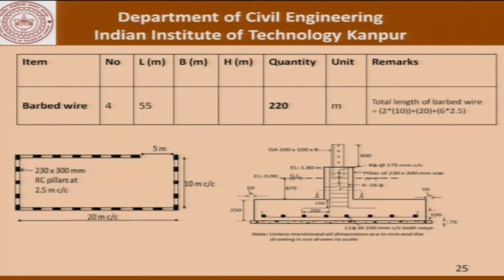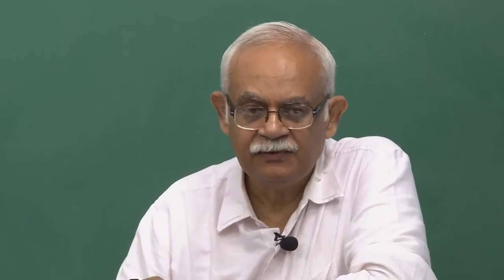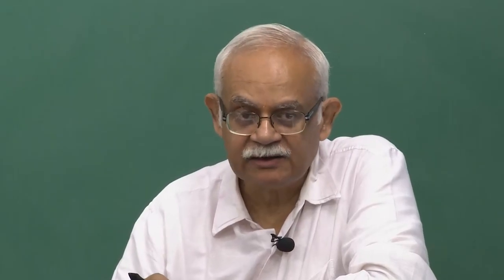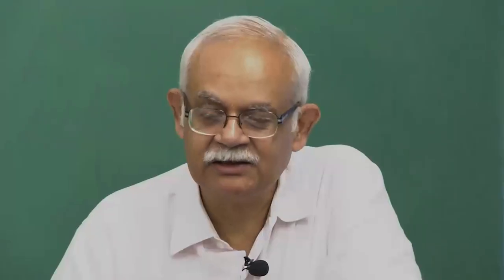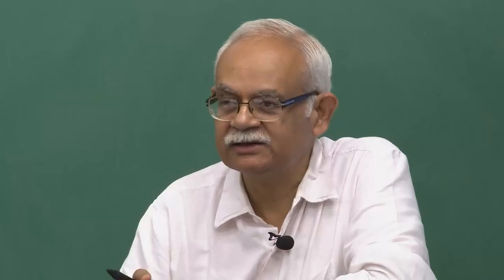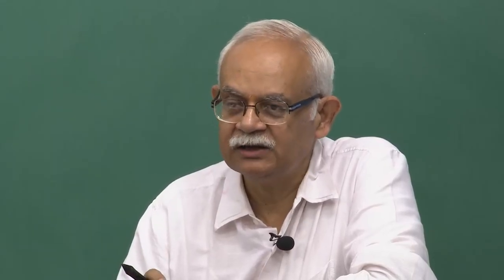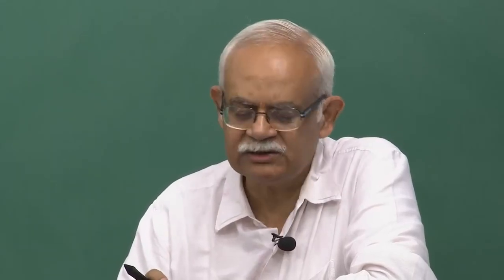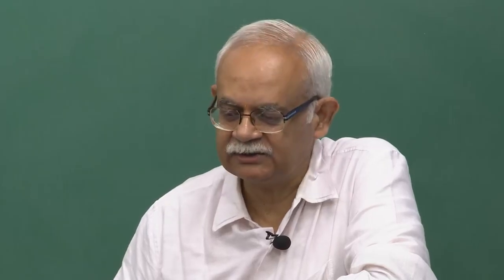For barbed wire, there are 4 layers each running 55 meters, requiring a total of 220 meters of barbed wire. With this, we complete most items on our list. The quantity of the ISA 100-108 structural steel angle is left as an assignment for you to calculate.